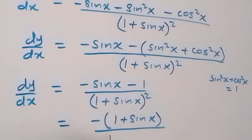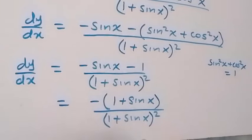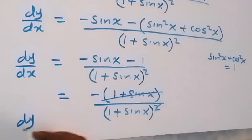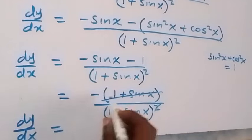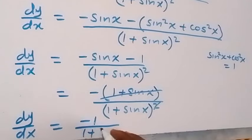This 1 plus sin x cancels one of this. Then dy/dx from here gives us minus 1 over 1 plus sin x. Therefore, the differential coefficient of the function given is minus 1 over 1 plus sin x.